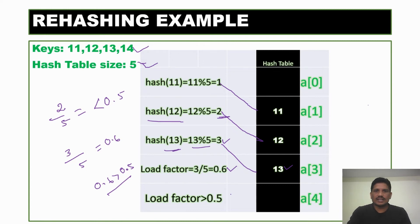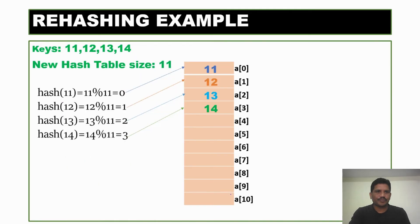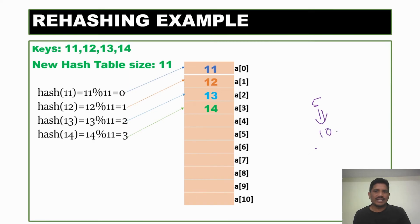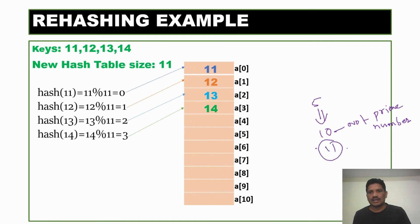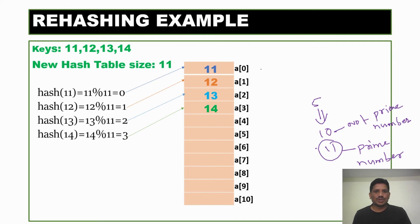In the next step, what is the new hash table size after rehashing? The size is doubled — the previous size was 5, so doubled is 10. But 10 is not a prime number, so we take the next prime number above 10, which is 11. Therefore, the new hash table size is 11, with index positions 0 to 10. Then we recalculate the hash codes using the new hash table size.